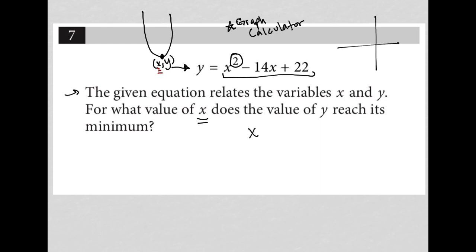But there is a formula for finding the x value of the vertex of a parabola. And that is x equals negative b over 2a.